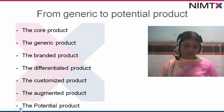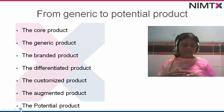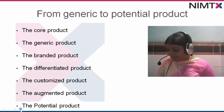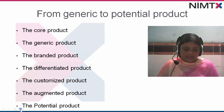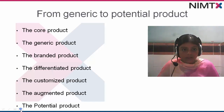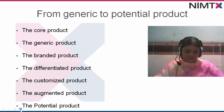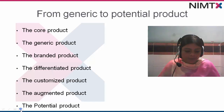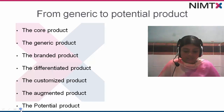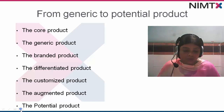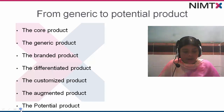A customized product is customer-specific. You can take the example of clothes. Ready-made garments represent customization for a group of people. When you buy one, you ask for alteration to suit your shape and size. On the other hand, if you give clothes to a tailor for stitching, the garment is customized to you according to your specific requirement and need. That is known as the customized product.